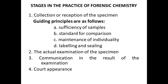The second stage in the practice of forensic chemistry is the actual examination of the specimen, usually conducted at the crime laboratory by a licensed and authorized forensic chemist. After the examination, the forensic chemist makes a report of the results and communicates this to the requesting law enforcement authorities. The last stage is the court appearance, where the forensic chemist is subjected to questions in court as an expert witness. These are the stages in the practice of forensic chemistry.